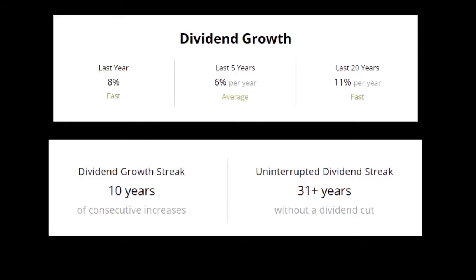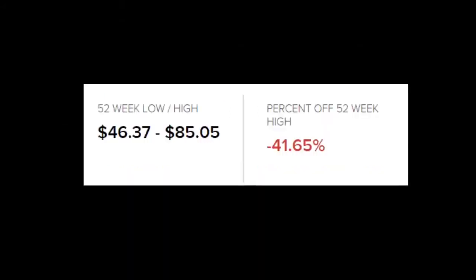How does liquidity work? Liquidity for a company typically refers to the company's ability to use its current assets to meet its current or short-term liabilities. The current ratio, also known as the working capital ratio, measures the liquidity of a company and is calculated by dividing its current assets by its current liabilities.